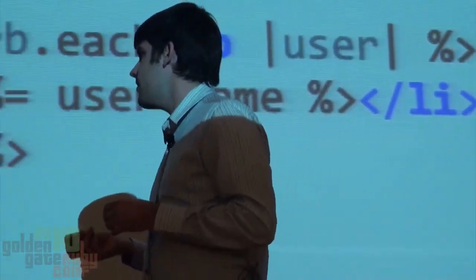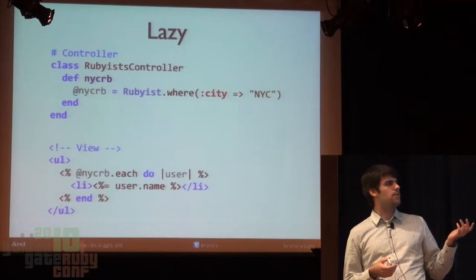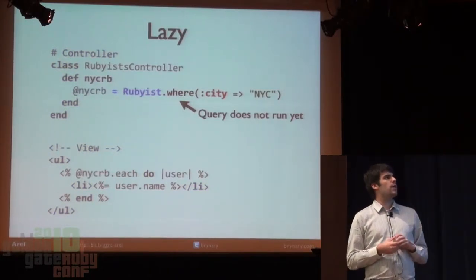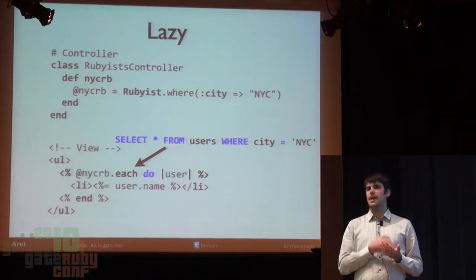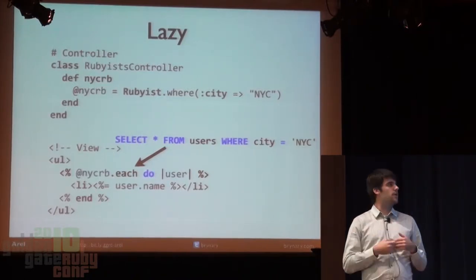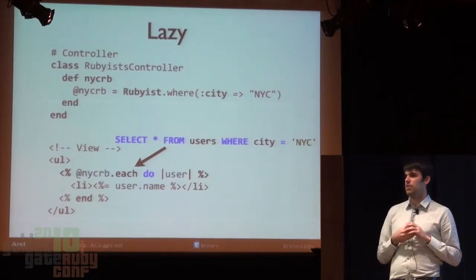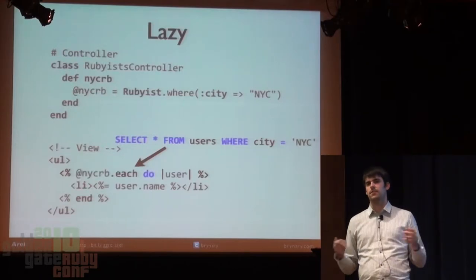One of the coolest things about relations in Rails 3 that will positively affect your code as soon as you upgrade is the concept of laziness. This is the common pattern where you run a query in a controller — or get a reference to a result set — and then iterate through that in your view to generate HTML. In Rails 3, when you say Rubyist.where(city: 'NYC'), the query doesn't actually execute. When you call .each, at that point Ruby has to go back to the database. The concept to remember: at the point you iterate over a relation is the time the query executes.